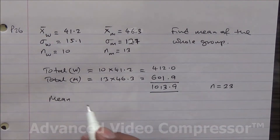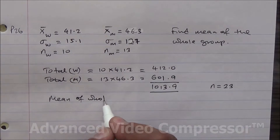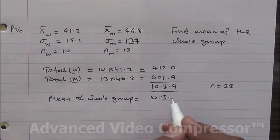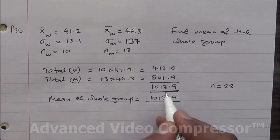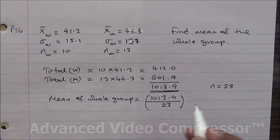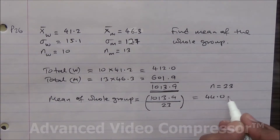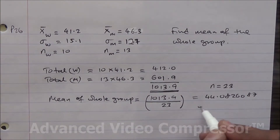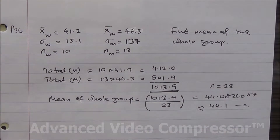The mean for the whole group is going to be the total for the men and the women divided by 23. That gives us 44.0826..., approximately 44.1. That's the mean for the whole group.